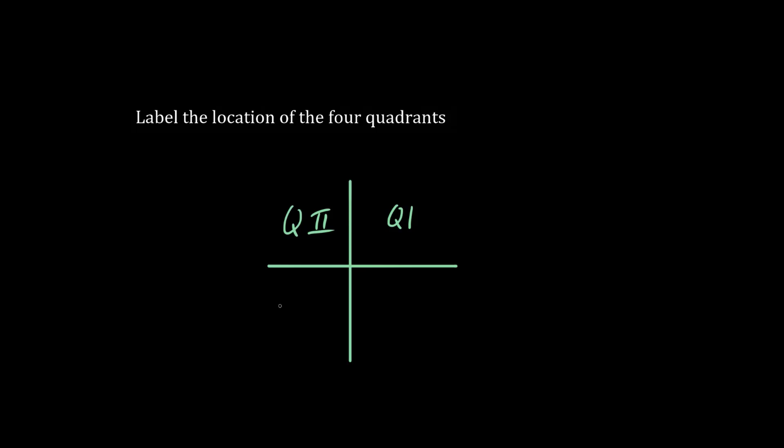Next to it, we have quadrant 2. And then we have quadrant 3. These are Roman numerals. Finally, we have quadrant 4.